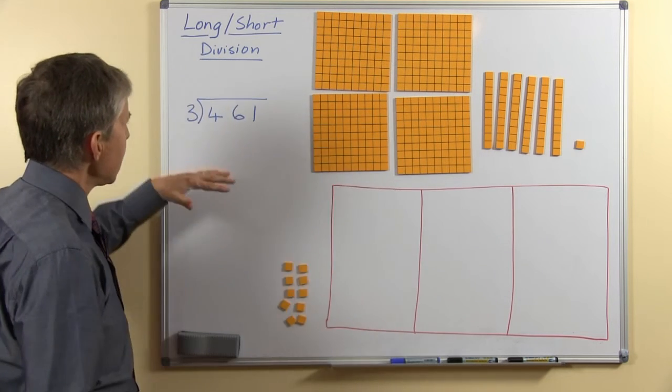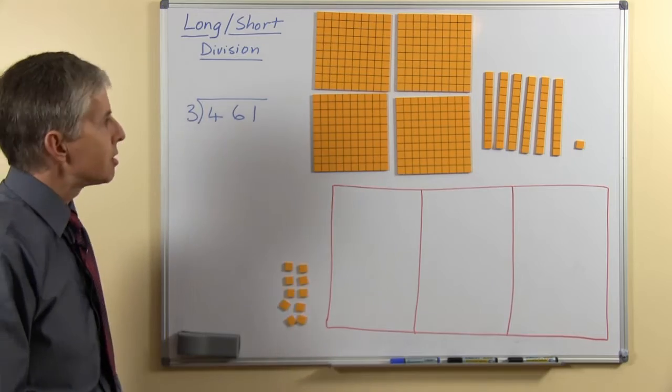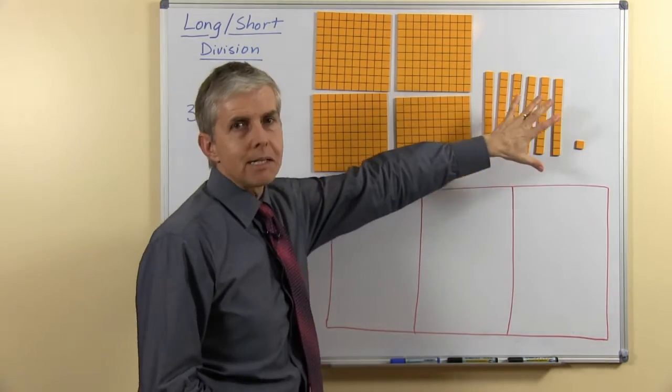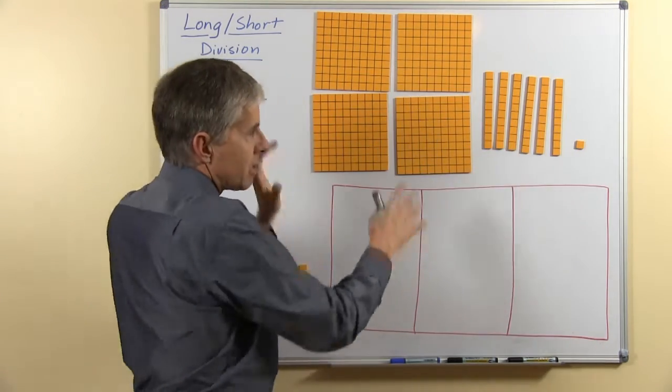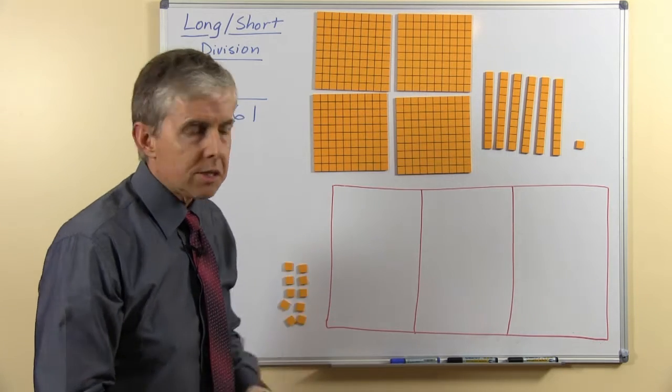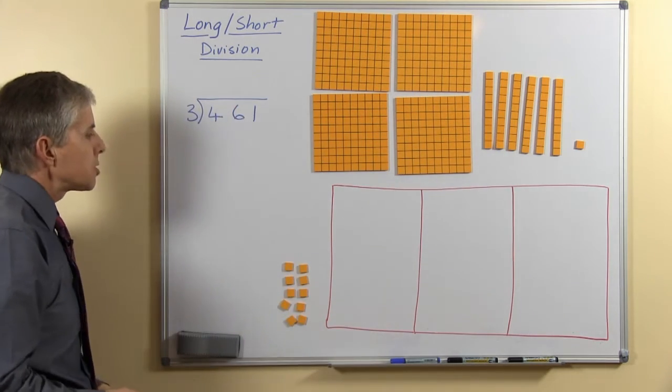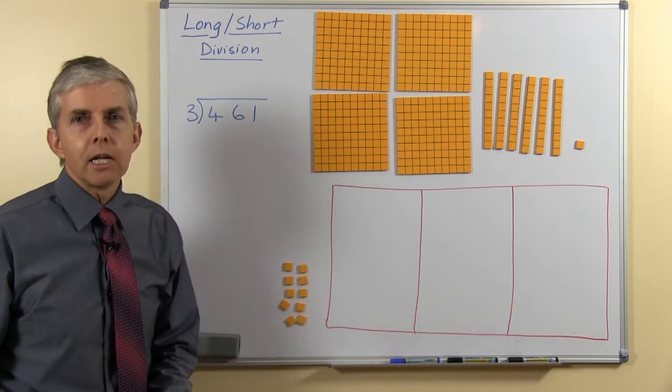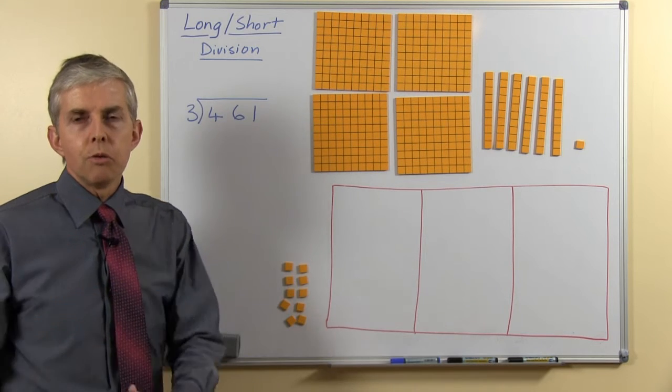So we're looking at the question 461 divided by 3 and we're using base 10 material, this is special base 10 blocks that will stick to the whiteboard. So this is probably something you've done in class already, so this will be revision.